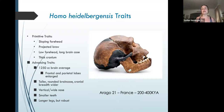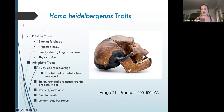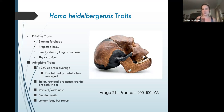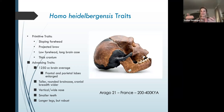Homo heidelbergensis is a transitionary species, meaning they're going to have some of those primitive traits left over from Homo erectus, like the sloping forehead behind a projected brow ridge, and that long, low brain case with a thick cranium. But they're also developing more advanced traits, including a big increase in brain size — about 1,250 cubic centimeters on average. The frontal lobe and the parietal lobes of the brain appear to be enlarging, and the frontal lobe is going to be very important to higher-order thought, which may explain why we start to see increased advancement of culture and technology among this species.